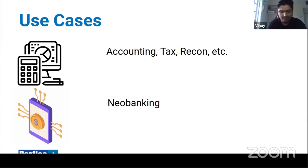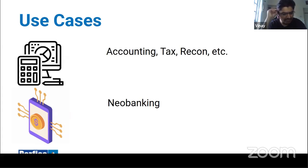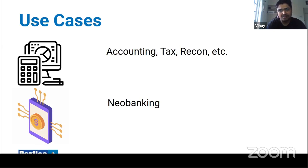Every time a data fetch happens, the account aggregator triggers an SMS notification to the customer: 'Your data was pulled by HDFC Bank for this consent — please log in if this was not for your intended purpose so you can revoke access.' So customers get multiple notifications from different account aggregators, but they do have the option to choose more than one account aggregator to share data, with possible overlaps.